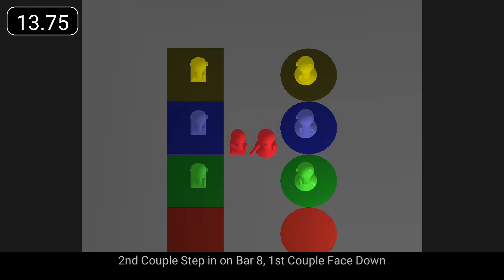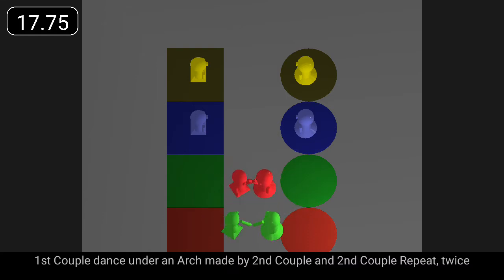Second couple step in on bar eight. First couple face down. First couple dance under an arch made by second couple and second couple repeat and do that twice.